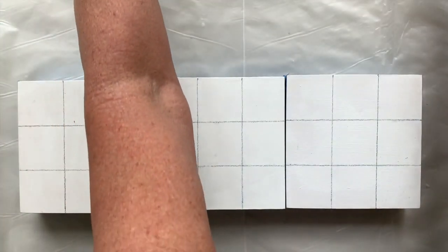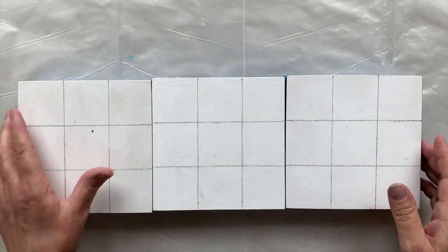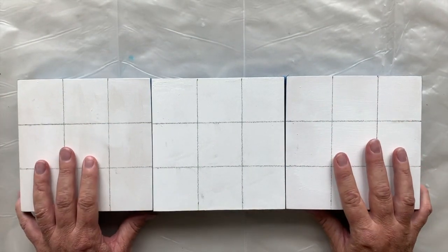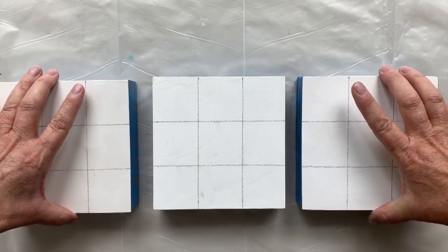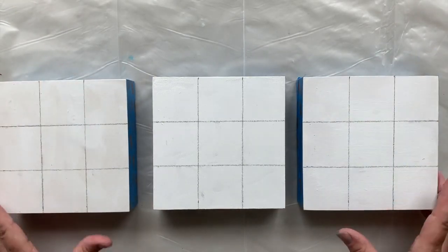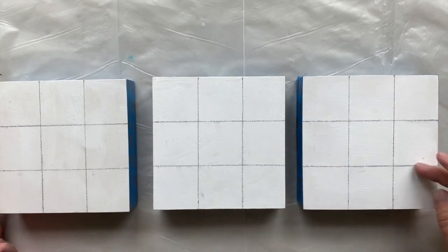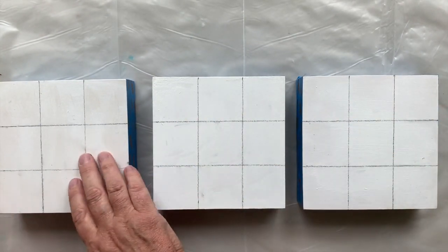A good way to do it is, I'm going to move this aside. In the beginning you don't have to actually draw on your canvas. In this instance I've got three wooden panels and I've drawn on them the rule of thirds on each one because I'm going to demonstrate.